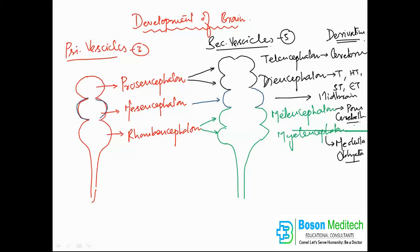So basically, the pons, medulla, and cerebellum — your hindbrain — develop from the metencephalon and myelencephalon, which in turn develop from the rhombencephalon. That is the development of your forebrain, midbrain, and hindbrain, all developing from the cranial part of the neural tube. Hope this video helps you — thank you all, we'll meet again in the next video.